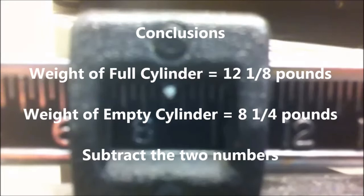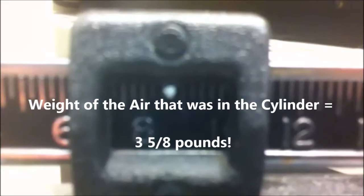The final weight is approximately eight and one quarter pounds. Now the full cylinder original weight was 12 and one eighth pounds. If we subtract the two values, we find out that the air that was in the cylinder had a weight of three and five eighths pounds.